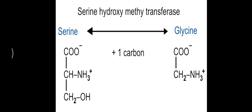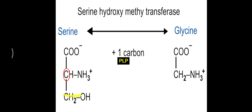In this reaction, the one-carbon molecule is transported with the help of tetrahydrofolic acid. The enzyme is serine hydroxymethyl transferase. Two cofactors are required: tetrahydrofolic acid (vitamin B9/folic acid) and pyridoxal phosphate (PLP, vitamin B6), which is the most common vitamin involved in protein metabolism. Both vitamins are needed for the interconversion of serine to glycine and glycine to serine. Note that the alpha carbon of serine is converted into the alpha carbon of glycine.